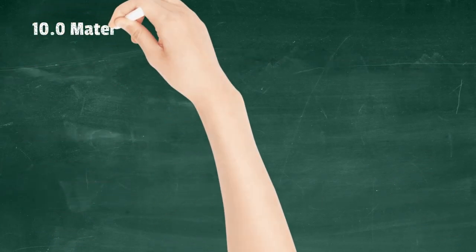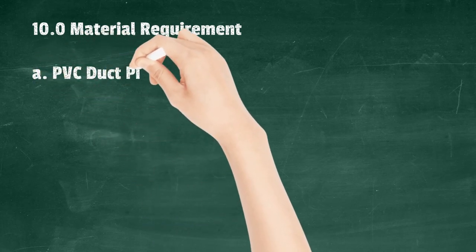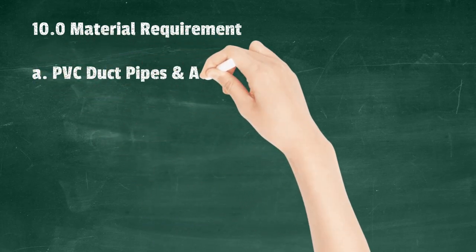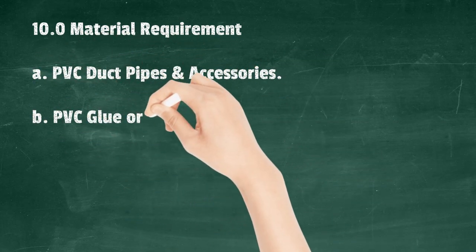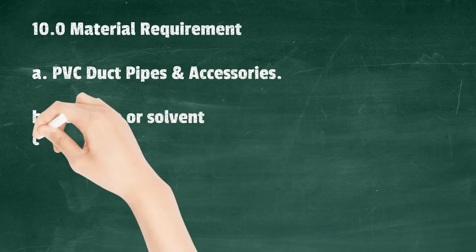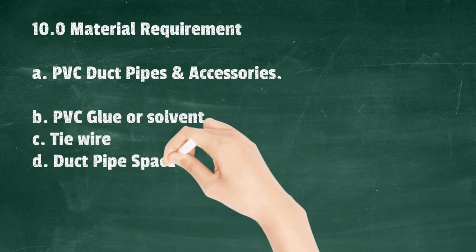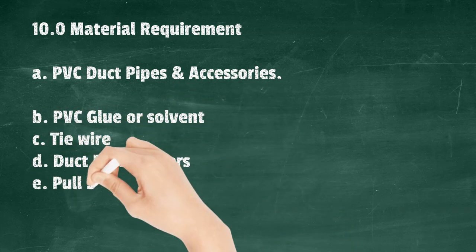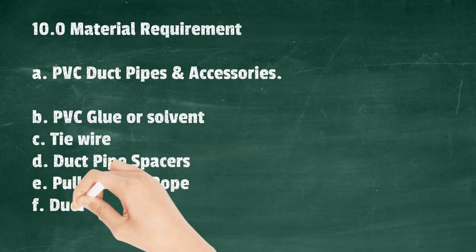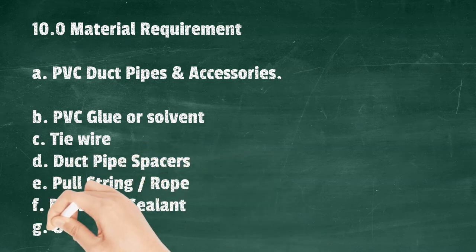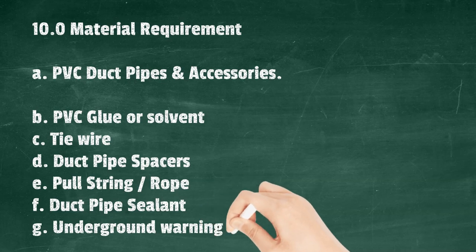Material Requirement: A) UPVC duct pipes and accessories; B) PVC glue or solvent; C) Tie wire; D) Duct pipe spacers; E) Pull string/rope; F) Duct pipe sealant; G) Underground warning tape.